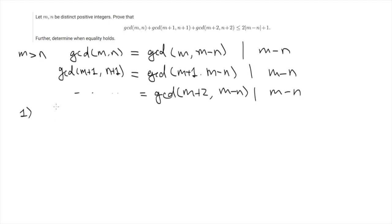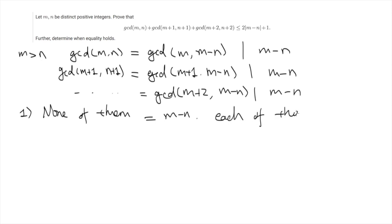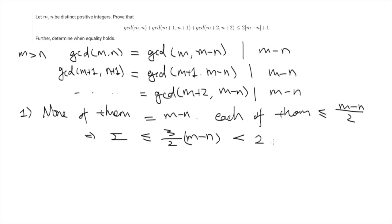So now we notice that all these terms divide m minus n, and in most cases they are strictly smaller than m minus n. This is the first case we consider: none of these terms is equal to m minus n. Since they all divide m minus n, they are smaller or equal to m minus n divided by 2. This gives immediately the inequality because the sum is smaller than 3 times m minus n plus 1, so in this case the inequality is strict.